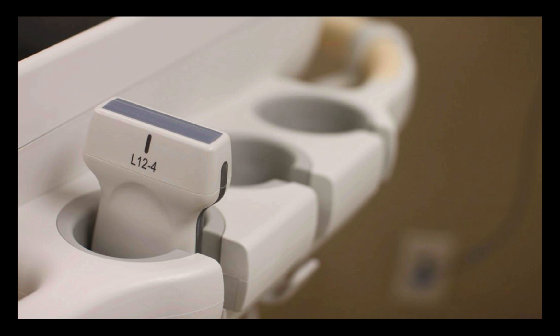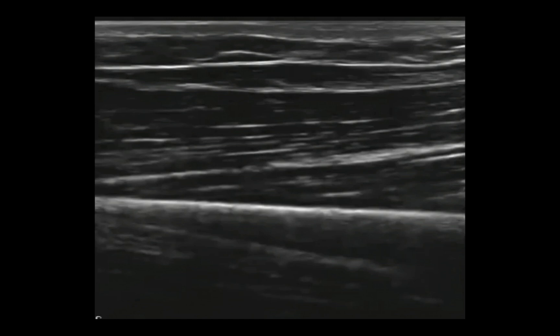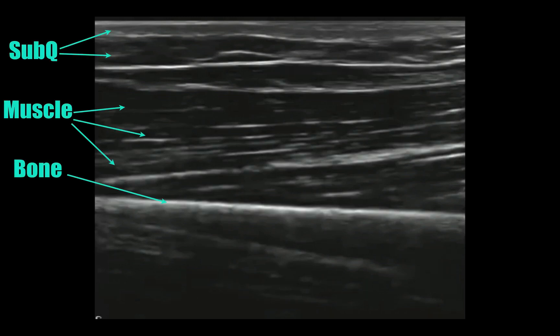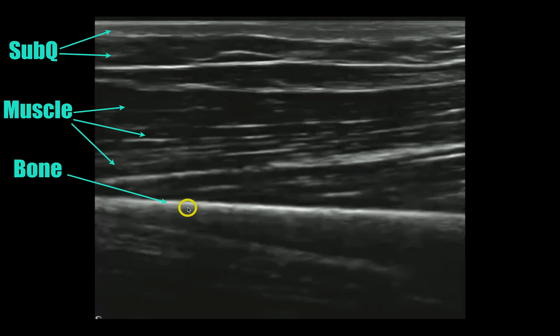This area that you're putting the transducer on is usually pretty painful for the patient. Now let's talk about what normal looks like. You have your skin up top, a little bit of a lacy appearance up here. You have the fascial plane right here, the muscle with a lot more of a striated appearance, and then the bone with this hyperechoic cortex right here.